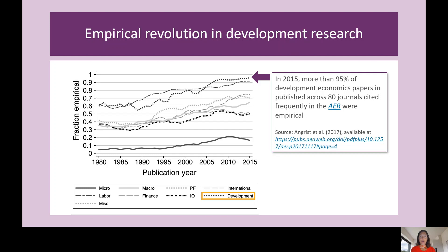As a part of this shift, researchers are increasingly working with complex, original data. At the same time, empirical research projects are expanding in both scope and scale. More people are working on the same data over longer time frames and greater geographic spaces. In this context, documenting how data are created, handled, and analyzed is a critical component of research quality.